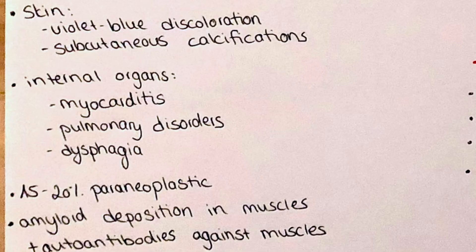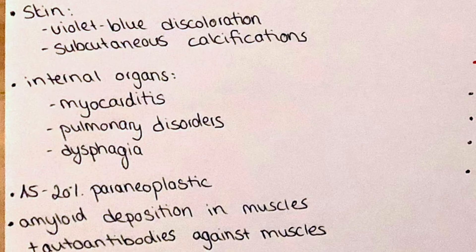In dermatomyositis, in contrast to polymyositis, there is also skin involvement. The skin will appear violet-bluish and will present with whitish papules and subcutaneous calcifications. Many patients also experience Raynaud's syndrome, which is a form of vasospasm leading to white-bluish discoloration of the skin in the fingers and toes in response to exposure to cold weather.